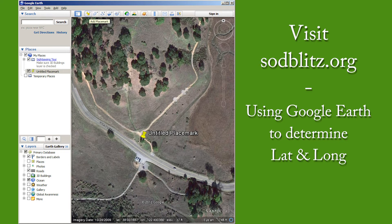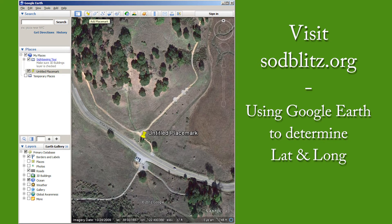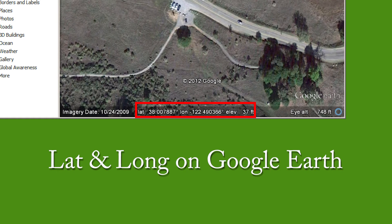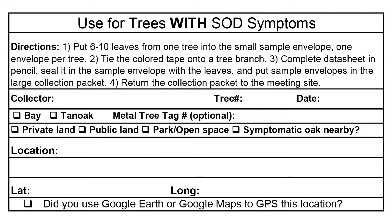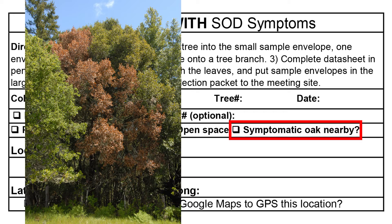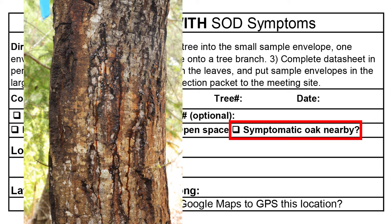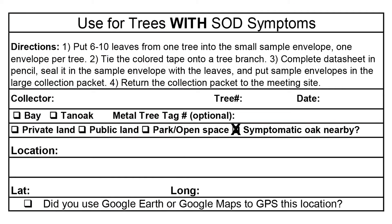There is an additional way to determine your latitude and longitude after you complete your collection trip using Google Earth. Go to www.sodblitz.org to download a PowerPoint that explains how to use Google Earth to determine the locations of trees you sampled. Another required piece of information in the datasheet is whether there are any oaks that have died recently or that are bleeding within 30 yards of the tree you're sampling. If you see a bleeding or dead oak within 30 yards, tick the appropriate box in the datasheet form.